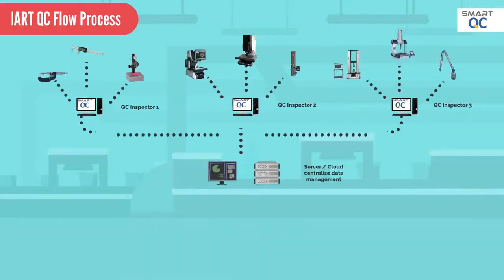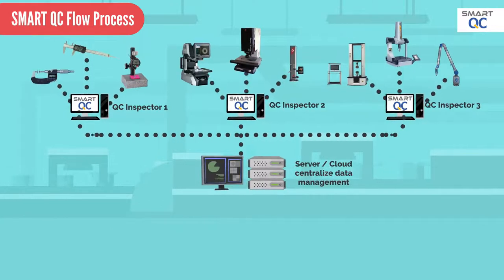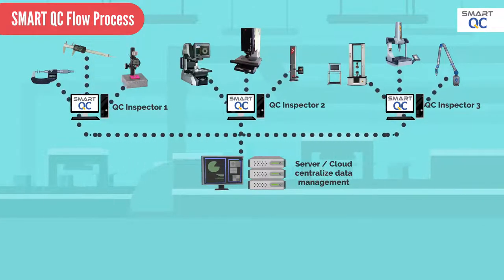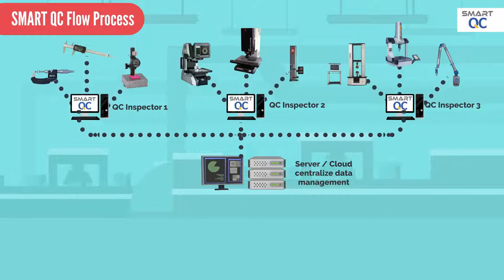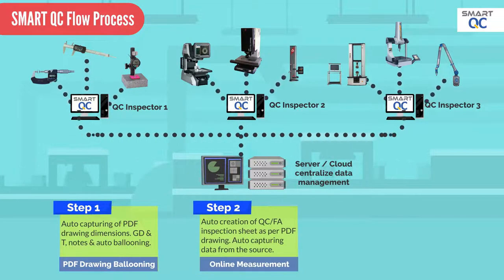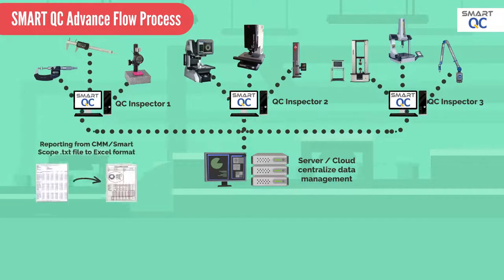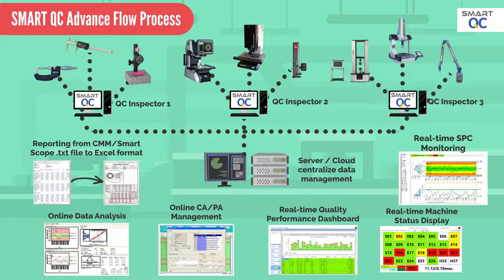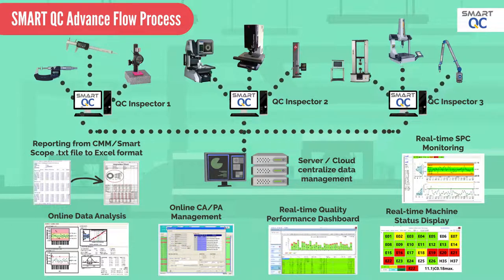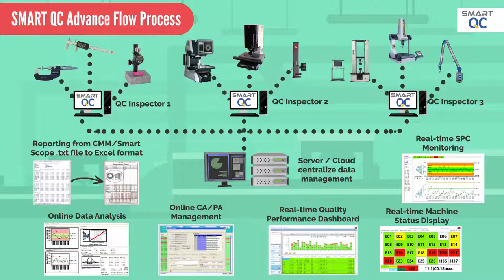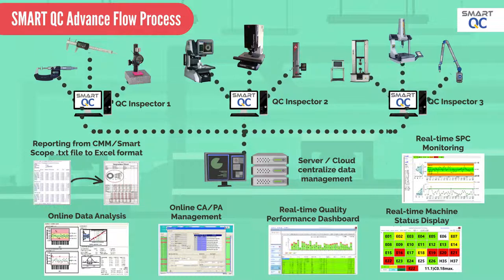Smart QC is a revolutionized solution which automates the entire first-article inspection process. It covers right from PDF drawing ballooning, measurement data capturing, and report generation. Furthermore, the advanced version of Smart QC consists of SPC monitoring, CPK monitoring, QC performance dashboard, non-conformance alert, and online corrective or preventive action.